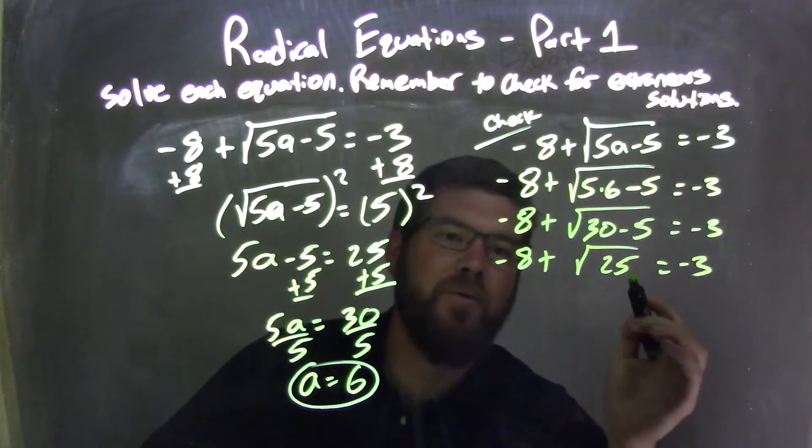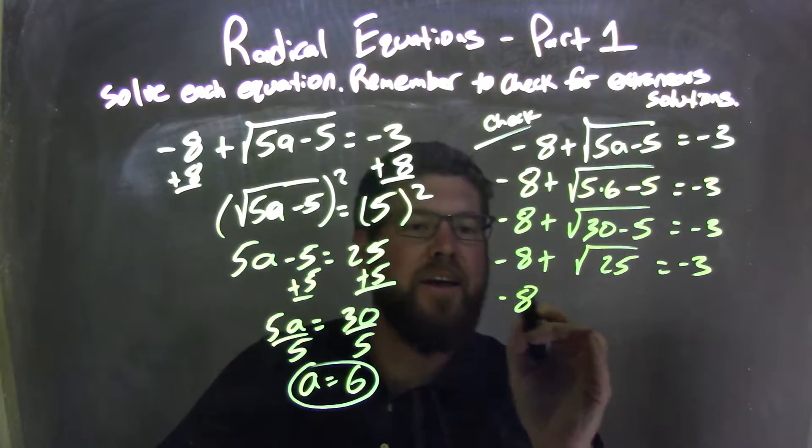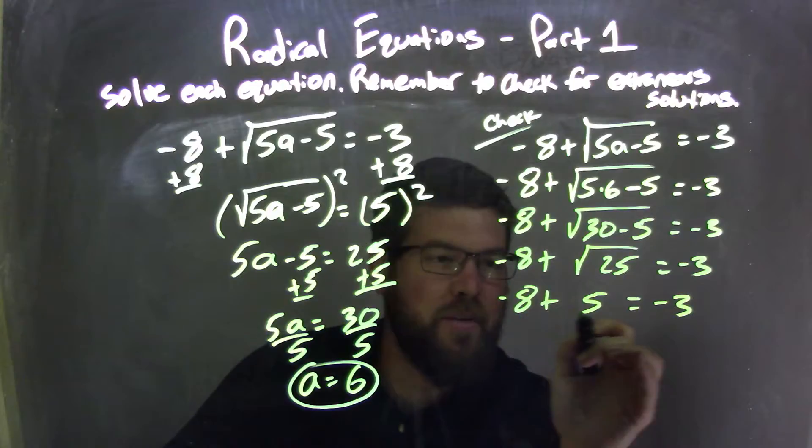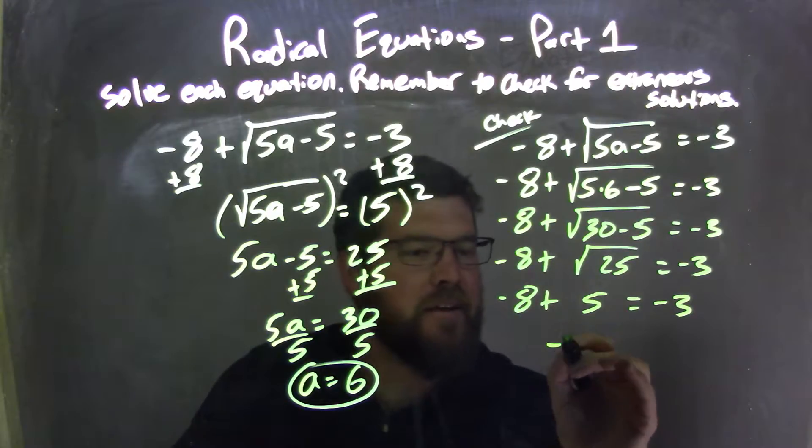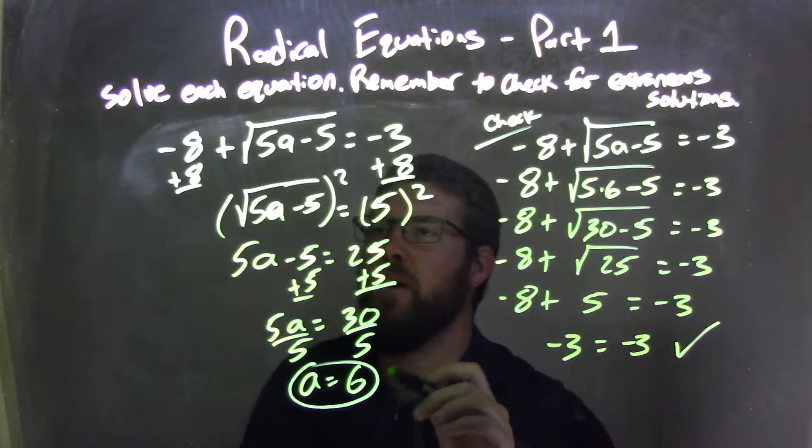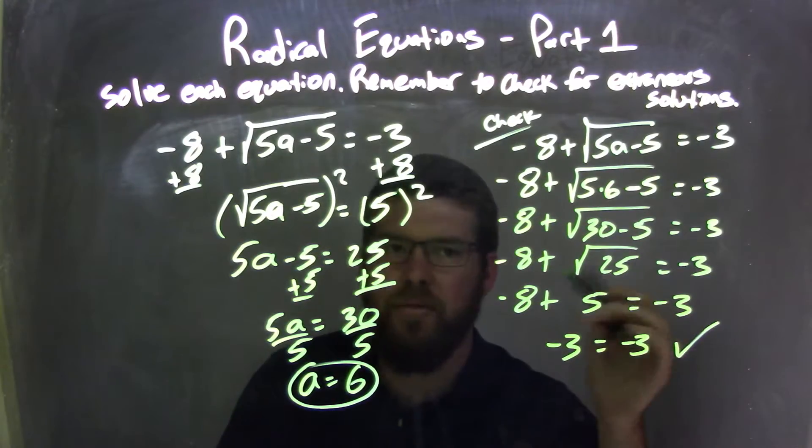The square root of 25 is 5. So negative 8 plus 5 equals negative 3. And negative 8 plus 5 does equal negative 3. My left and right are equal. Fantastic. A equals 6 is my real answer here. Nothing was extraneous.